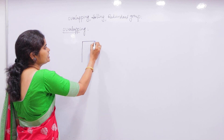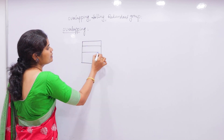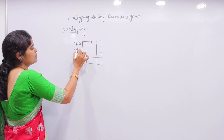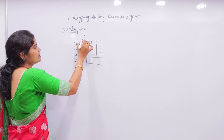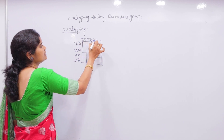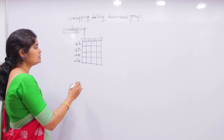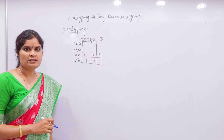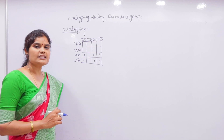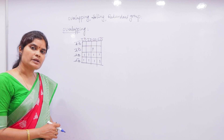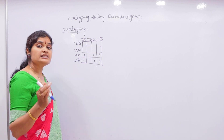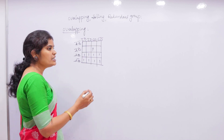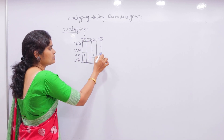Consider the same 4-variable K-map. So we have A-bar B-bar, A-bar B, A B, A B-bar across the top, and C-bar D-bar, C-bar D, C D, C D-bar on the side. Suppose we have a quad and an octet like this, and a number of 1s also like this. Our aim is to simplify the boolean expressions and reduce the number of variables. The first priority always goes to octet, then quad, and the last priority goes to pair. So here we have an octet, so first priority is octet.